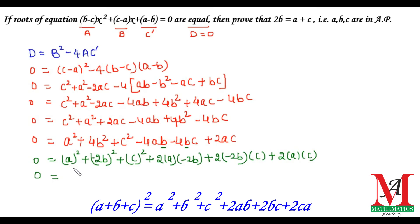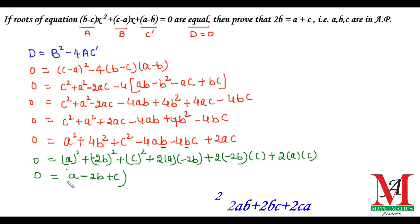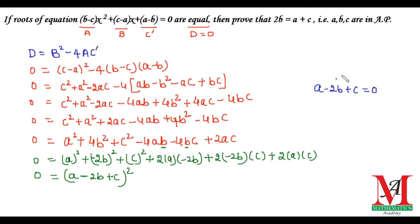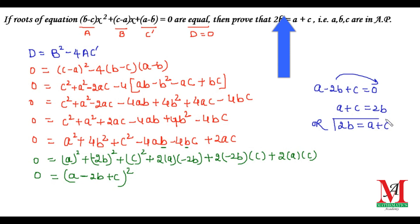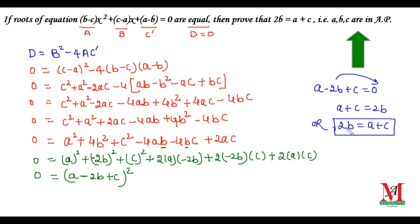So we write (a − 2b + c)² = 0. Taking the square root, we get a − 2b + c = 0. Shifting −2b to the right-hand side changes the sign, leaving a + c = 2b, which may be written as 2b = a + c. This is our required result. Hence we say that these terms are in AP. Thank you, friends.